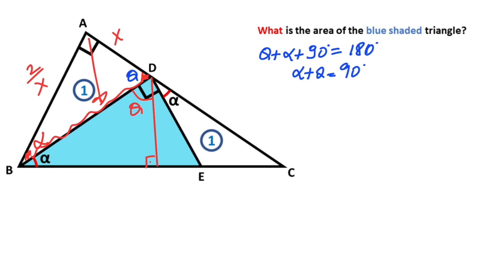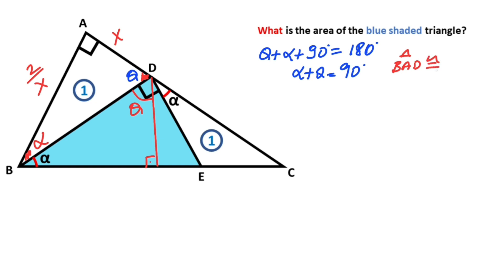These two triangles have the same angles and same side patterns, meaning they are exactly congruent. So triangle BAD and triangle — let's label this point K — triangle BKD are congruent.